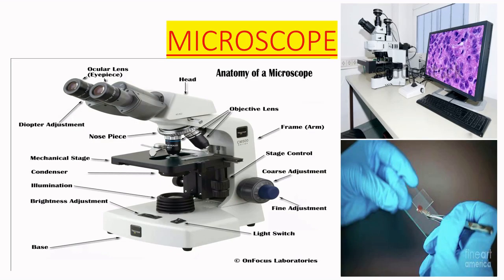This equipment is a microscope, which is very much related to microbiology to see microorganisms. This is the slide we have prepared, with microorganisms on it — this would be gram staining or acid-fast staining. We have to take the slide and place it here in the mechanical stage, that is the slide holder.